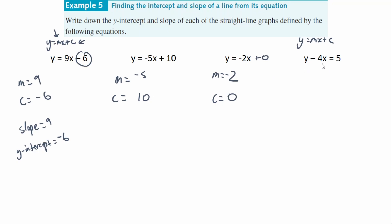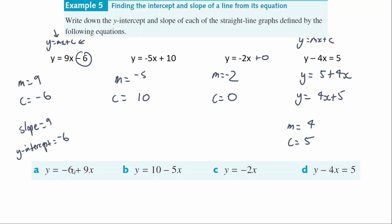To rearrange y minus 4x equals 5, I add 4x to both sides, giving y equals 5 plus 4x. You can put the 4x in front since the order of addition doesn't matter: y equals 4x plus 5. So m equals positive 4 and c equals positive 5. You may get questions where the order is different — if you see y equals a plus bx, just rearrange to put the x term first.